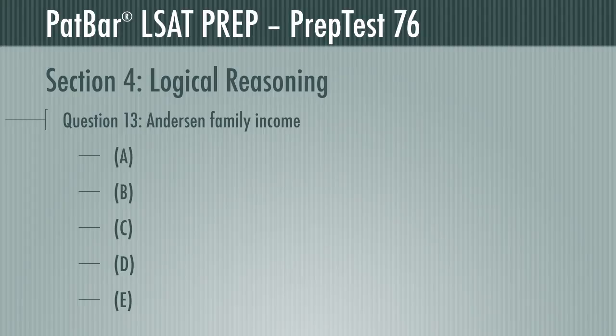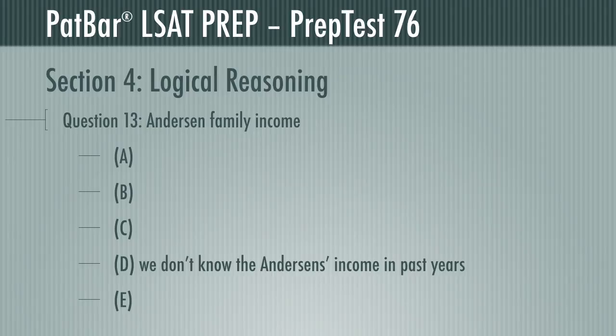Question 13 presents government statistics showing that the average family's income has gone up over the last five years, says the Anderson family's income is average this year, and concludes theirs must have gone up. We get a legitimately easy one here. To find the flaw in the reasoning, two words stand out: 'this year.' If we're constrained to this year, we don't know with the data we're given whether the Andersons earned more or less in the past. D is the flaw and the correct answer.